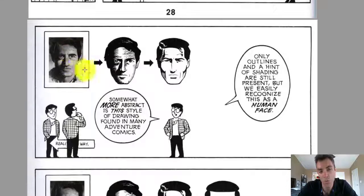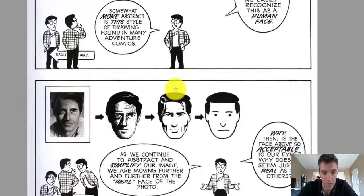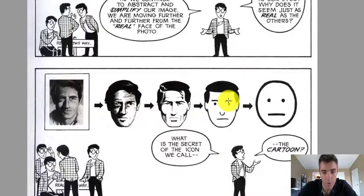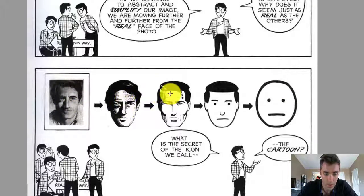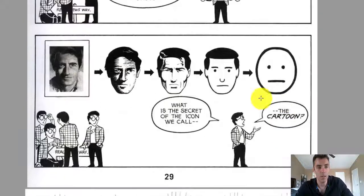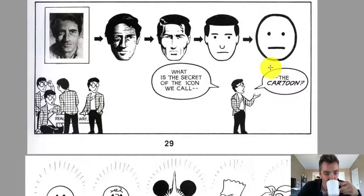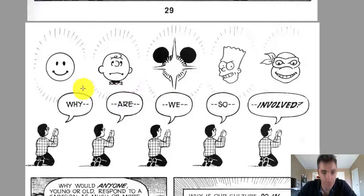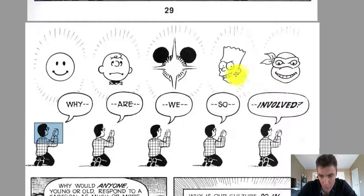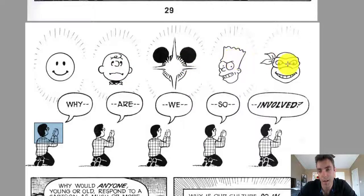Here's a photorealistic image, and then he abstracts a little bit, then more, then even more. He spends the next several pages explaining that we fill in these gaps. We don't need a whole lot of filling in for the realistic one — less and less as it abstracts — and so more and more people can identify with the abstraction. This is a white man, then it becomes more cartoony, and finally it's just a simple face. He's praying to various comic icons: a smiley face, Charlie Brown, Mickey Mouse, Bart Simpson, and a Teenage Mutant Ninja Turtle.